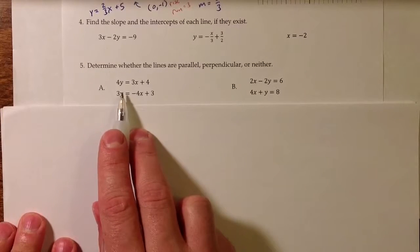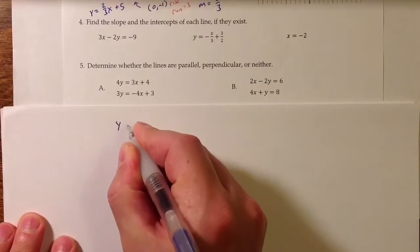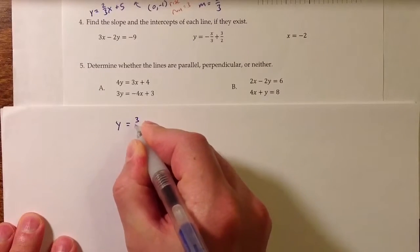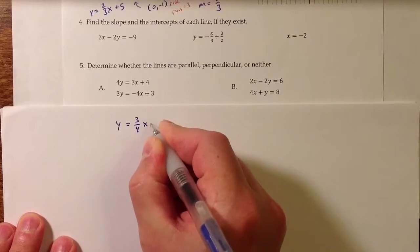For group A, for that first equation, if I divide everything by 4, I end up with y equals 3 over 4 times x plus 1.